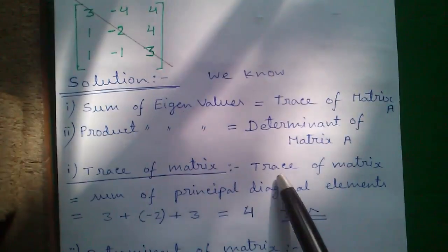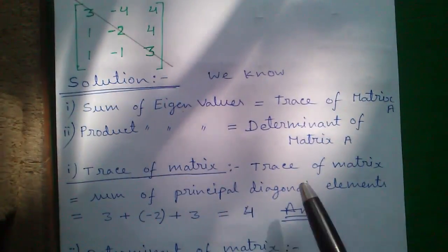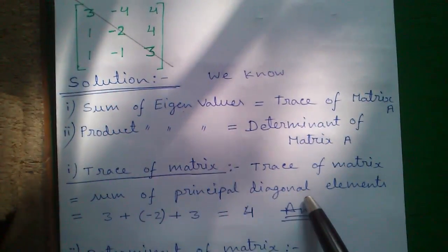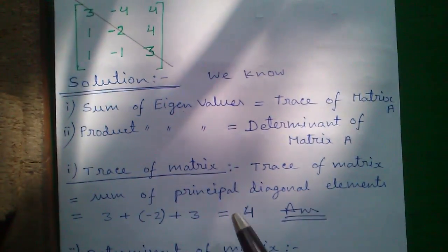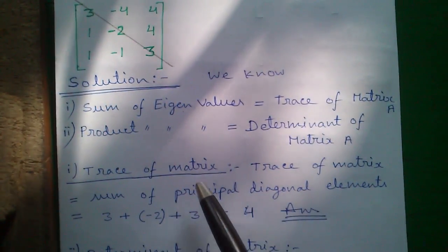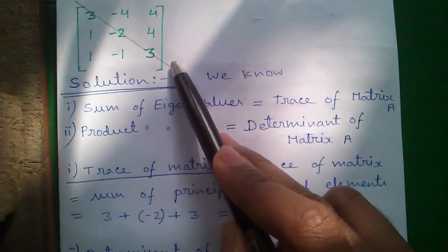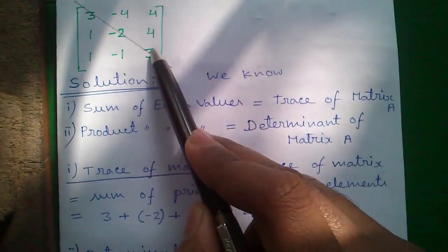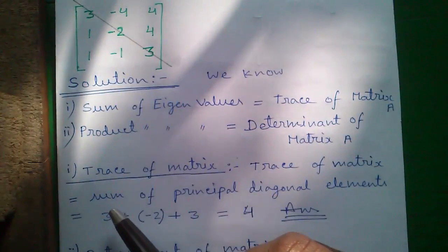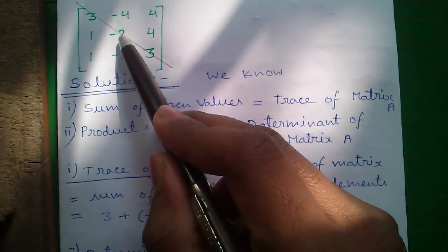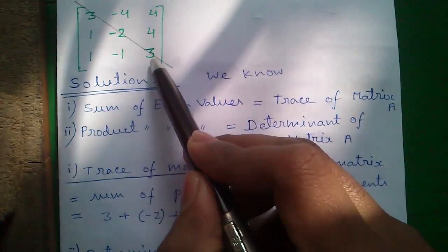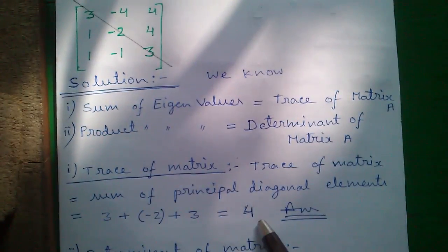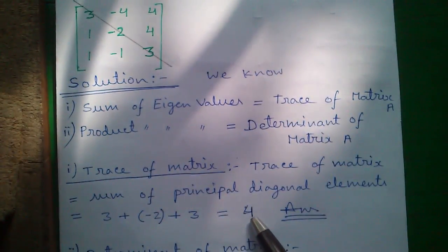The trace of the matrix is the sum of the principal diagonal elements of the matrix. These are the principal diagonal elements, and the sum of those elements is the trace. So the trace is 3 + (-2) + 3 = 4. This is the sum of the eigenvalues.